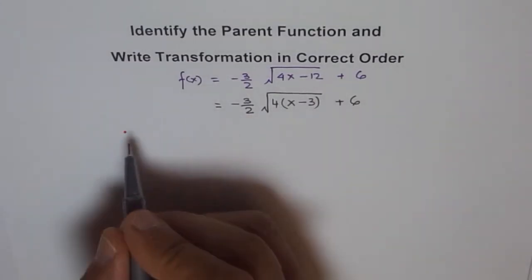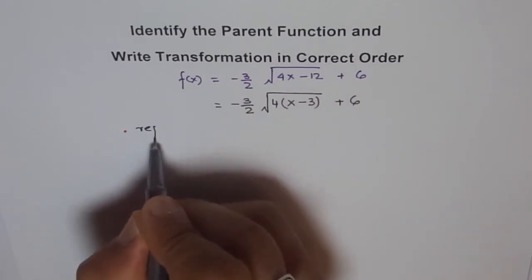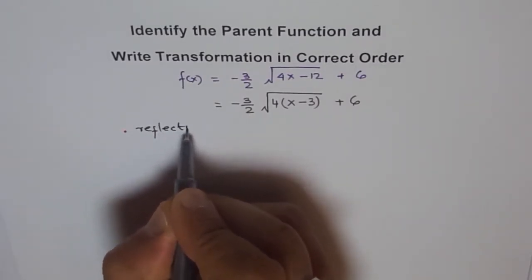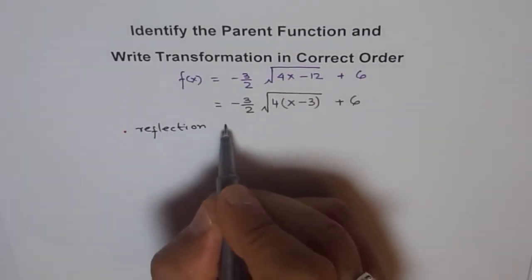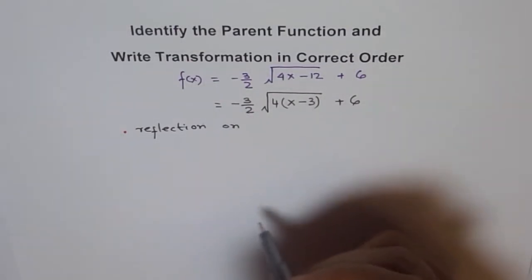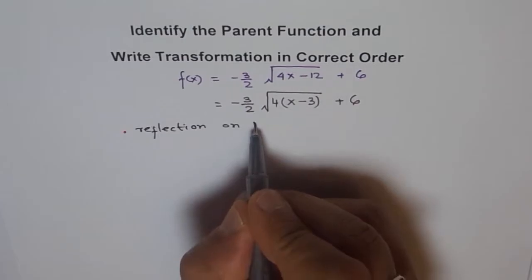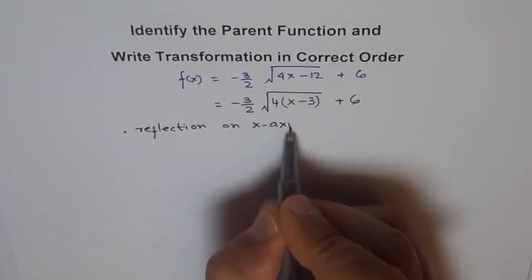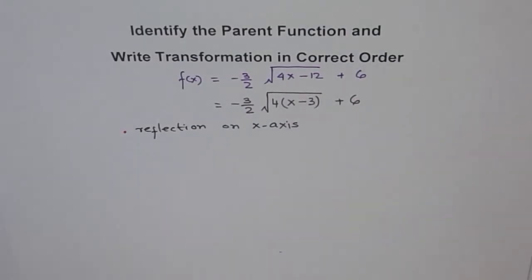So first is minus. That means reflection on which axis? It is vertical, it is outside. So vertically reflects like this. So reflection on x-axis.